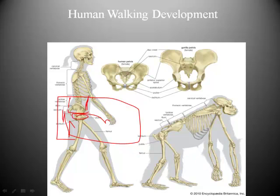Looking at our quadruped cousins, we can see that the pelvic orientation would be a much more unstable scenario if it were to adopt an upright position, which is one of the things that makes the Ambam video of the gorilla walking upright so unusual — because the bony skeleton is such that it doesn't particularly lend itself to this process.